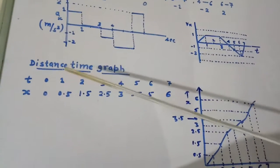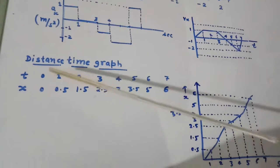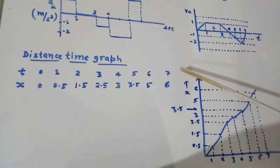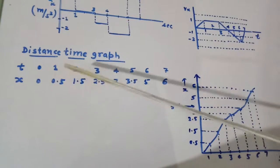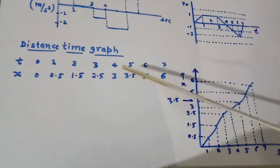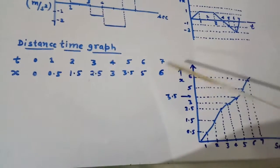At different time, the distance is calculated here like 0, 1, 2, 3, 4, 5, till 7 seconds. Distance will be 0, then 0.5, then 1.5, then 2.5, then 3, 3.5, 5 and 6.